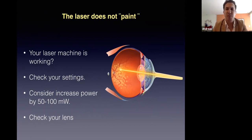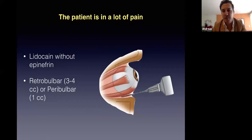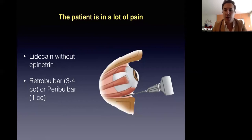What if the patient is in a lot of pain? The procedure can be very painful and some patients cannot tolerate it. You can use topical anesthesia, or retrobulbar or peribulbar anesthesia — it depends on your experience and comfort. Always use lidocaine with epinephrine. For retrobulbar, use 3 or 4 cc; for peribulbar, use 1 cc. If pain persists, you can repeat the injection.